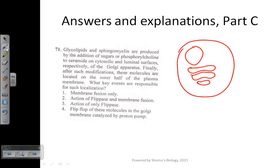The important fact is that these glycolipids as well as sphingomyelins are produced in the cytosolic side and luminal surfaces respectively. If you take Golgi apparatus, it has two different sides. One is the Golgi lumen which is this one and cytosolic side which is this one.